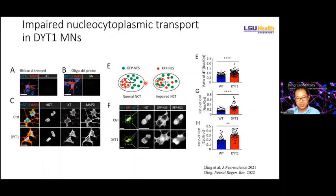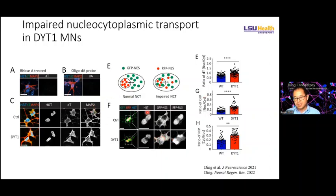Using a dual reporter — TFP fused with a nuclear export sequence and RFP fused with a nuclear localization sequence — if transport works well, we see RFP enriched inside the nucleus and TFP inside the cytoplasm. If transport is disrupted, the distribution of green and red becomes mixed. In control neurons, GFP and RFP are well separated, but in disease neurons, the distribution of the two reporters is mixed up. This indicates that under disease conditions, both mRNA transport and protein transport are disrupted.